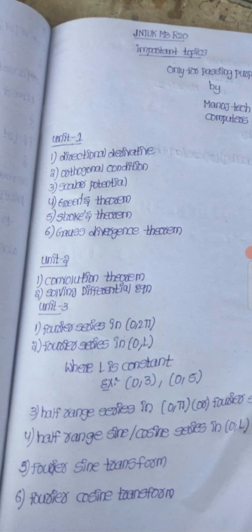In the third chapter, the Fourier series interval of 0 to 2π is covered. The interval 0 to 2π is one type of question, and 0 to capital L is another type of question. Here, capital L is a constant.